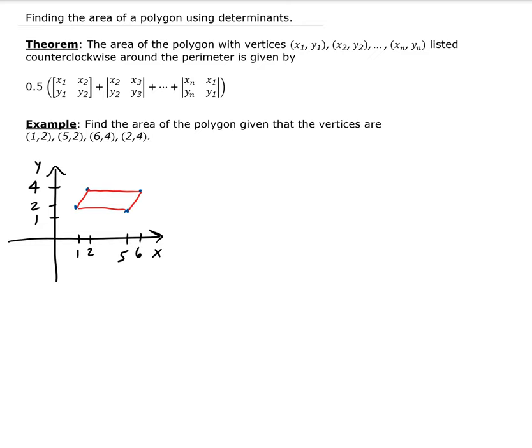We want to find the area of this. I'm going to label these going counterclockwise. I'm going to call this node 1. This will be node 2, node 3, and node 4. We're going to go this way around. Let's write those out.